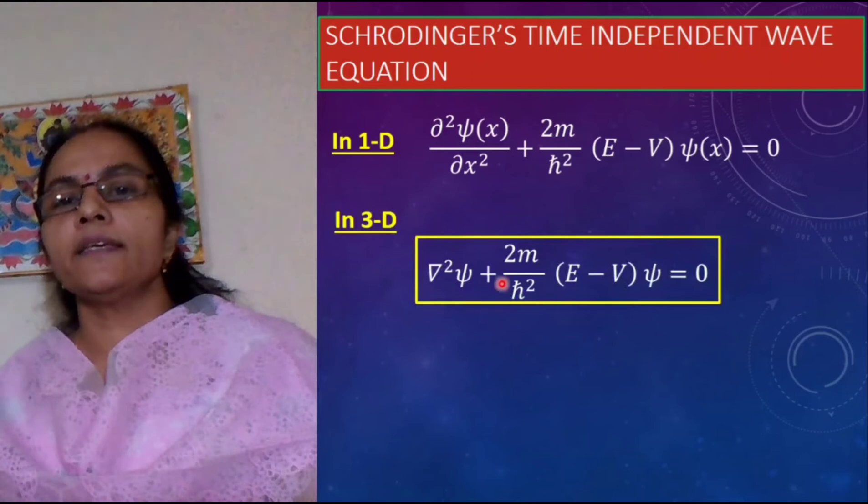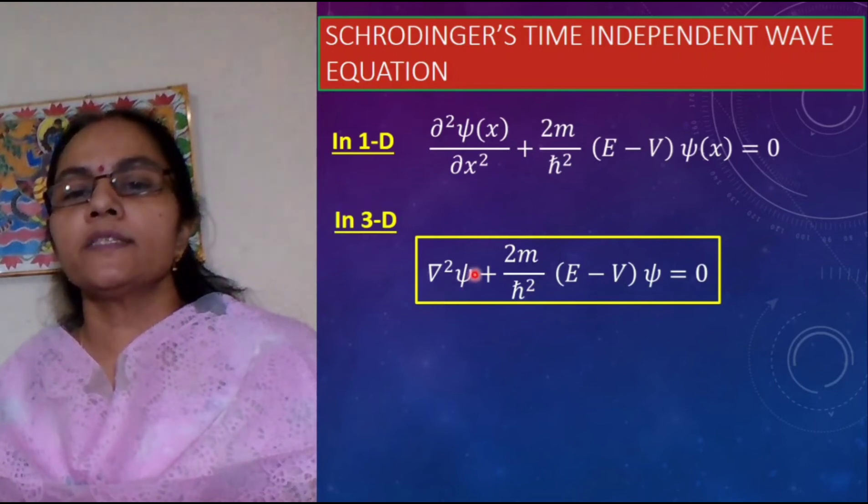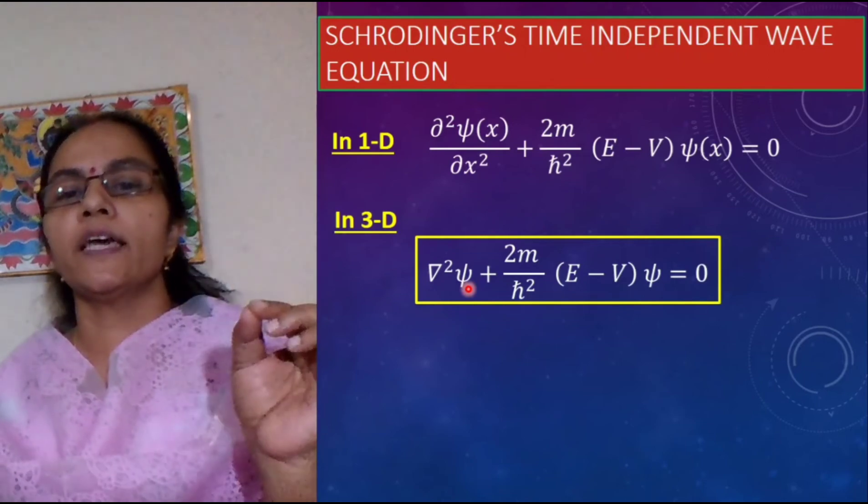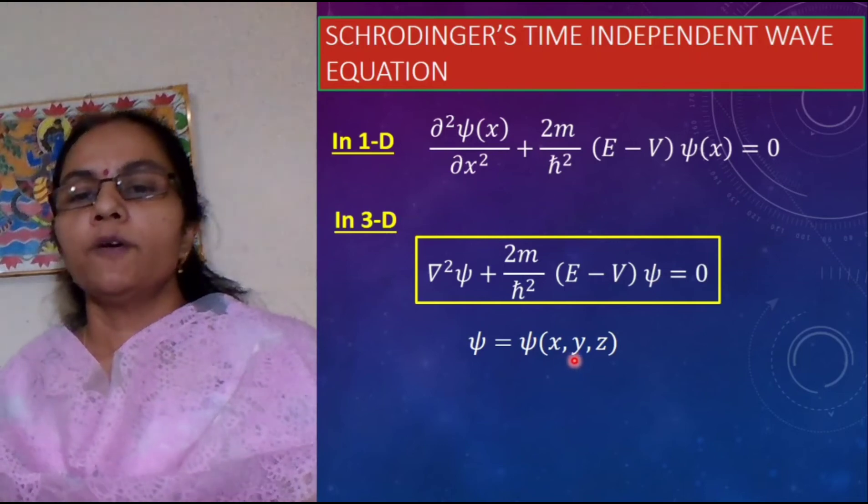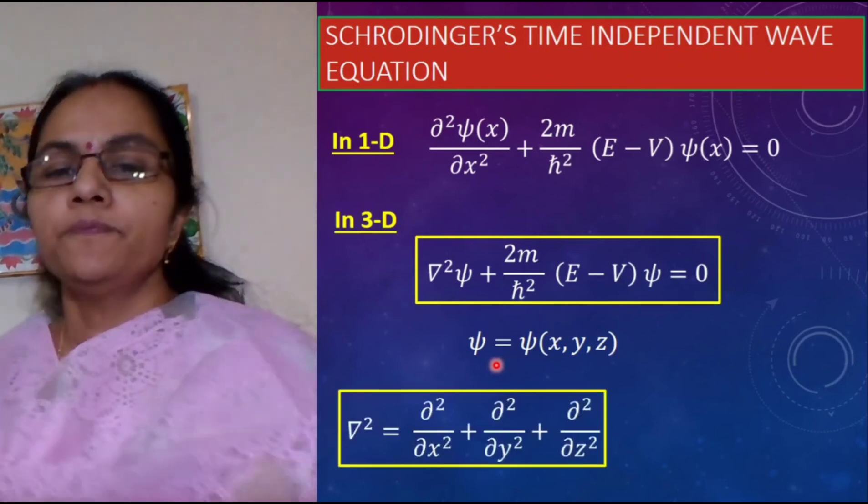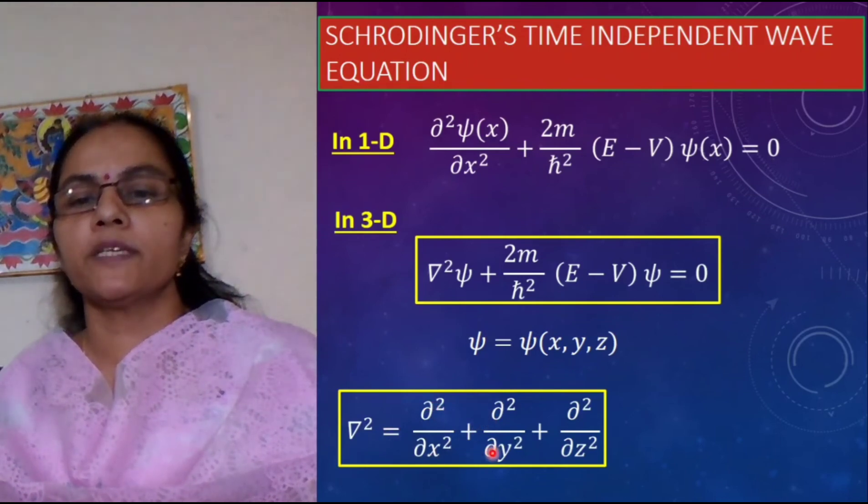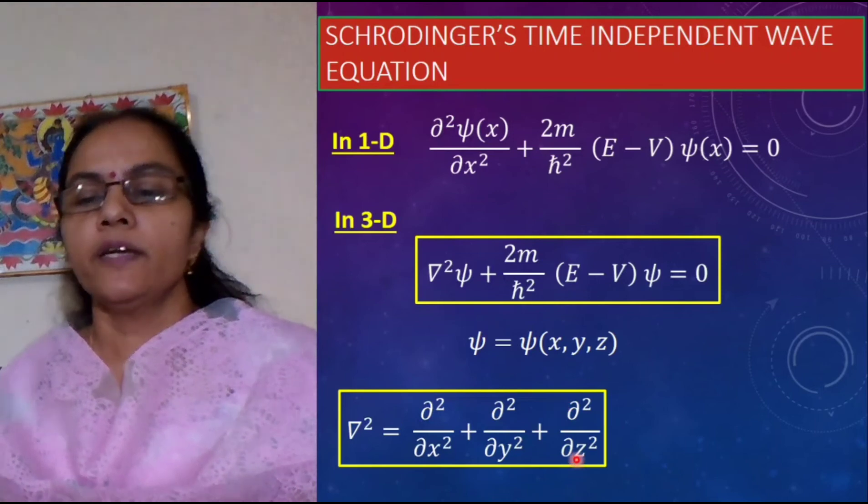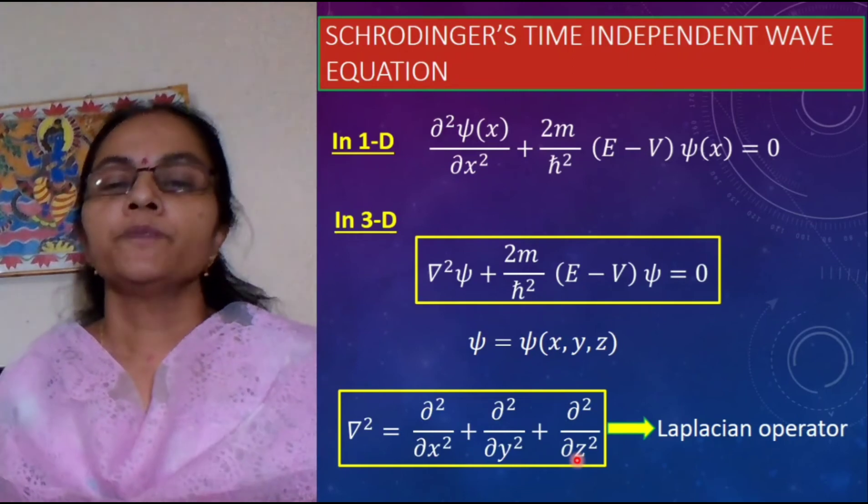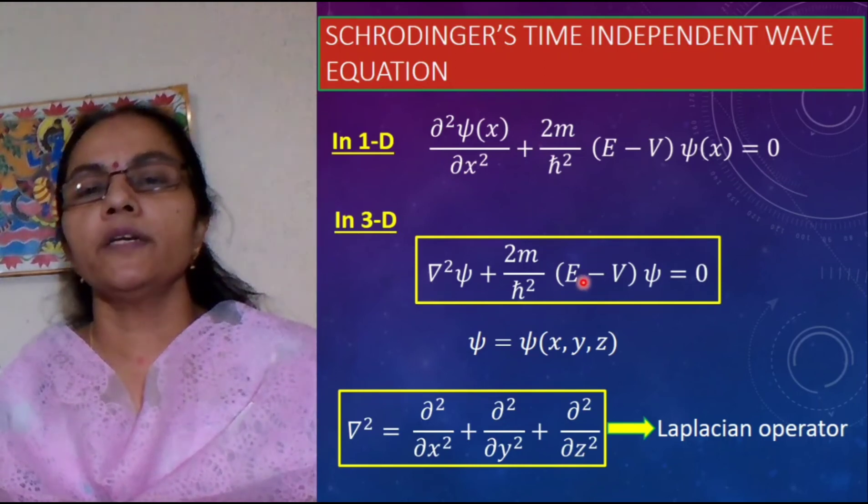Now this is the Schrodinger time independent wave equation in 3D. Here this psi or the wave function depends on three coordinates, the particle is moving in three dimensions. Here this wave function is in the form of x, y, z where this x, y, z are the position coordinates of the wave function. And this del square over here that is nothing but del square by del x square plus del square by del y square plus del square by del z square and you know that this is our Laplacian operator. So this is one dimensional Schrodinger equation and this is three dimensional Schrodinger's time independent wave equation.